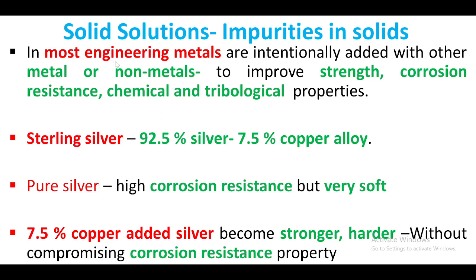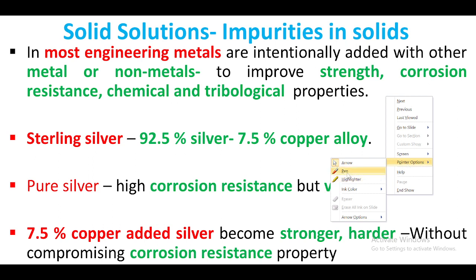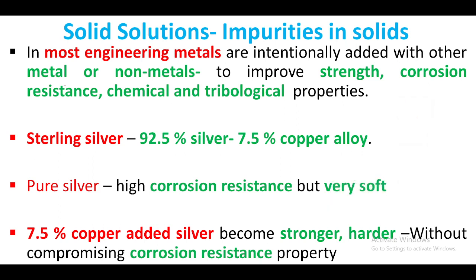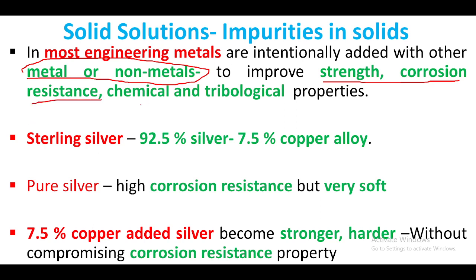For most engineering materials, other metals or non-metals are mixed in. Adding one metal or non-metal automatically improves strength, corrosion resistance, and chemical and tribological properties. For example, aluminium-copper alloy is used for engine cylinders.